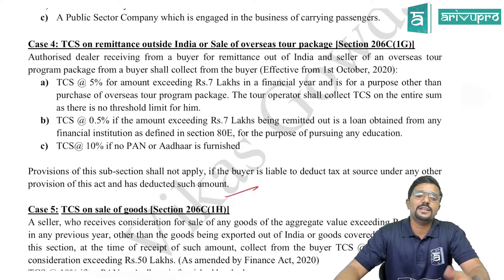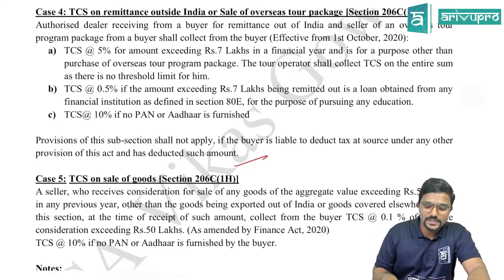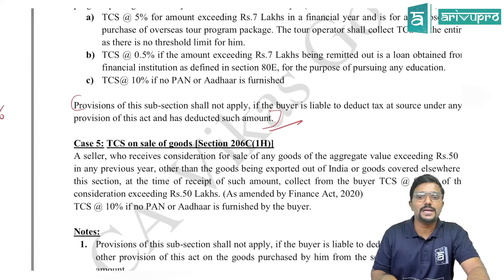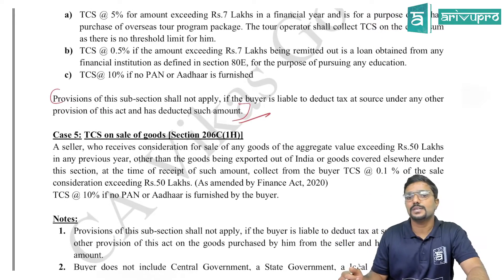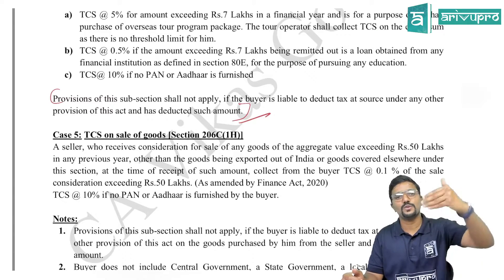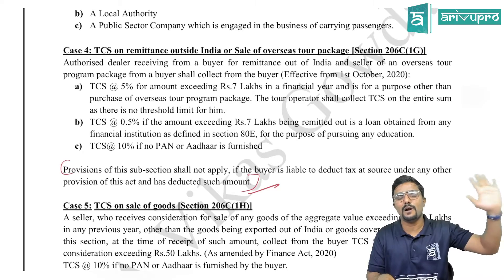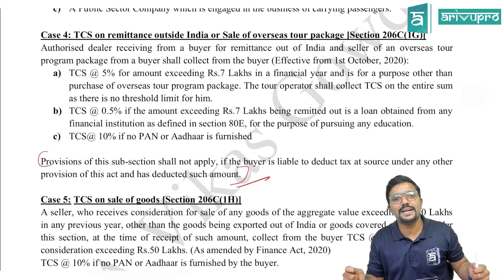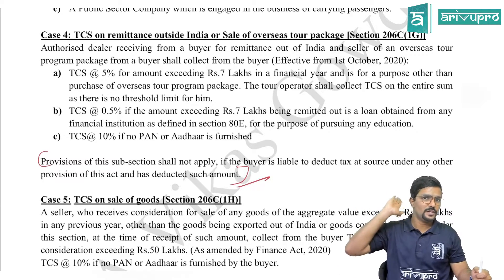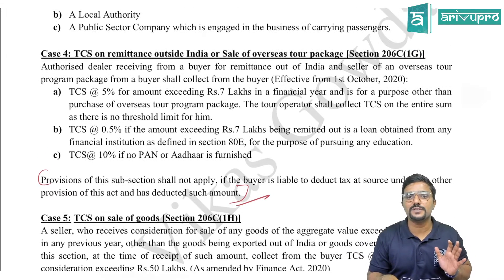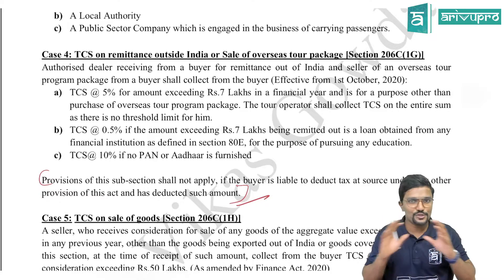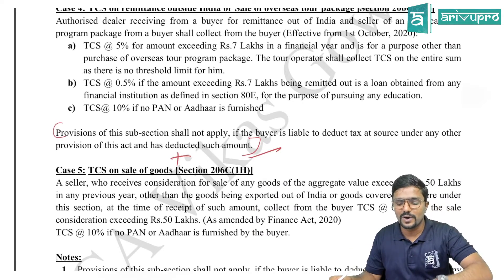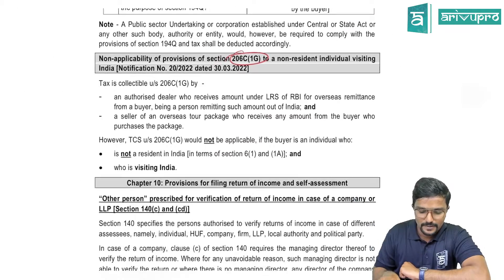There was an existing exemption under Section 206C(1G): the provision shall not apply if the buyer is liable to deduct TDS under any other provisions of the Act and has already deducted such amount. If the buyer has already deducted TDS under Section 194C or 194J on the same transaction, the seller need not again collect TCS. That was the existing provision, and now they have added some more exemption.